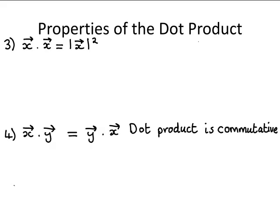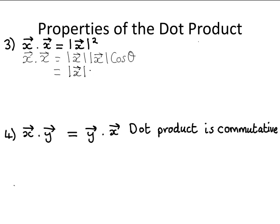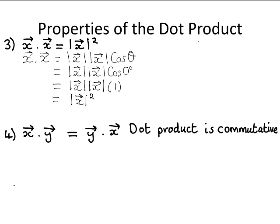Some more properties of the dot product: the dot product of vector x with itself is equal to the modulus of vector x squared. From the definition of the dot product, vector x dotted with vector x equals the modulus of vector x times the modulus of vector x times the cosine of the smaller angle between the vectors. Since it's the vector with itself, the angle is zero degrees, so this equals the modulus of vector x times the modulus of vector x, which is the modulus of vector x squared. So you've proven this result.